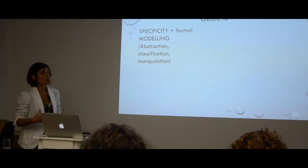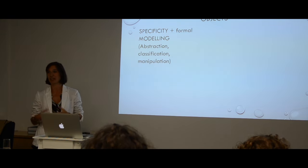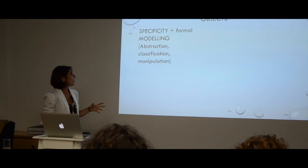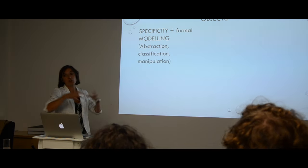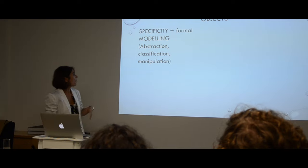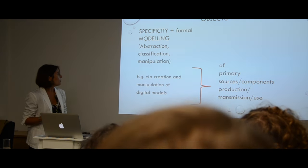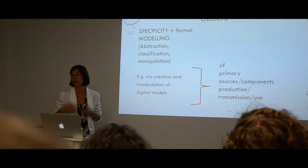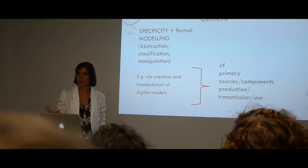What else can we say about the way in which we see our objects via the lenses of digital humanities projects? The specificity of the object is combined with formal modeling — and in addition to digitization, you have to balance out somehow the specificity of the object you work with, with abstracting some of those features of those objects to make algorithms that can play with those features, or classification and manipulation of those models. So we might balance out the specificity with formal modeling by the creation and manipulation of specific digital models of these primary sources, whether of the sources themselves or components of them, or the history of their production, transmission, and use.